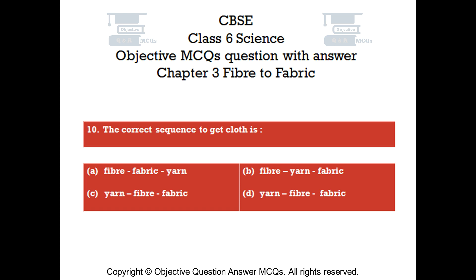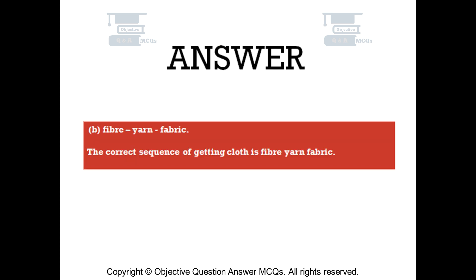Question number 10. The correct sequence to get cloth is — Option A: fiber, fabric, yarn. Option B: fiber, yarn, fabric. Option C: yarn, fiber, fabric. Option D: yarn, fiber, fabric. The right answer is option B — fiber, yarn, fabric. The correct sequence of getting cloth is fiber → yarn → fabric.